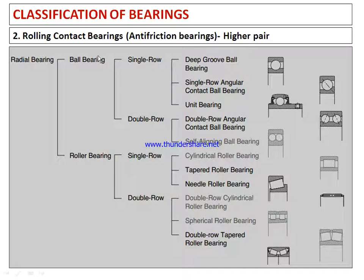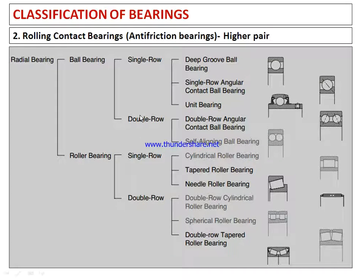In rolling contact bearings, under radial bearings we have ball bearings and roller bearings. Under ball bearings: single row deep groove ball bearing, single row angular contact bearing, and unit bearing. Also double row angular contact bearing and double row self-aligning ball bearing.